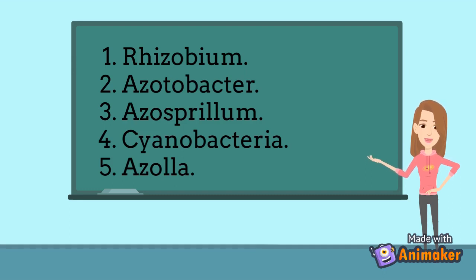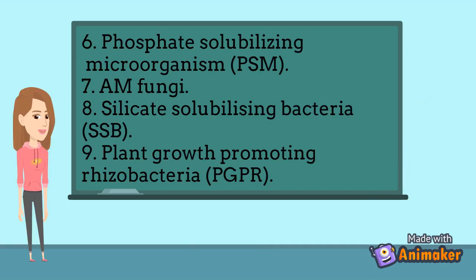Fourth is Cyanobacteria. It is also known as blue-green algae, and are usually single or multicellular aquatic organisms. Fifth is Azolla. Then phosphate-solubilizing microorganisms, PSM.